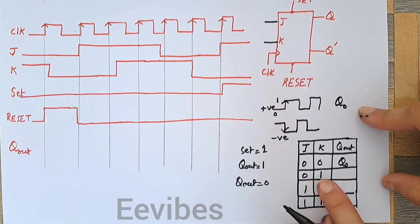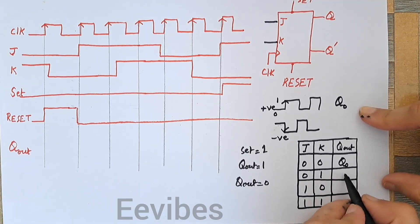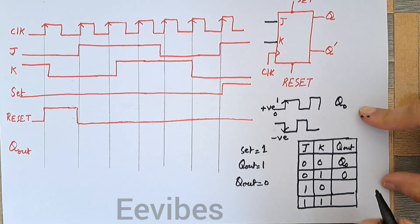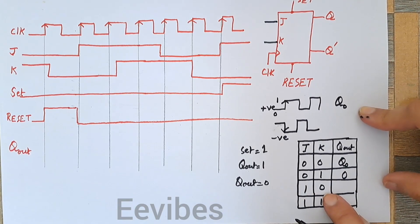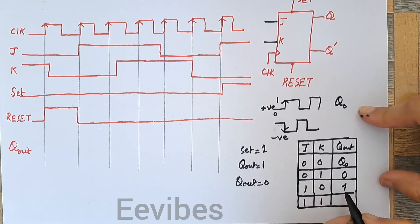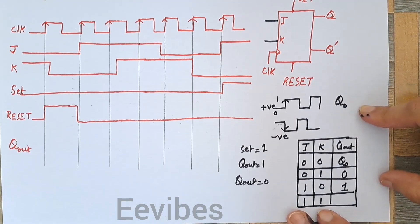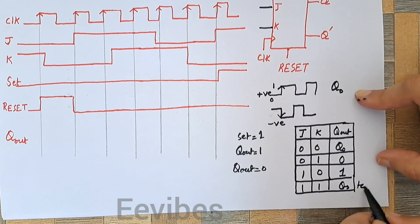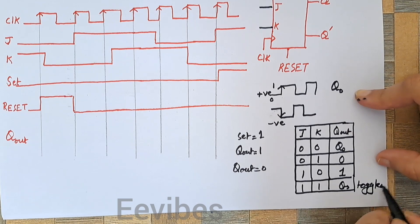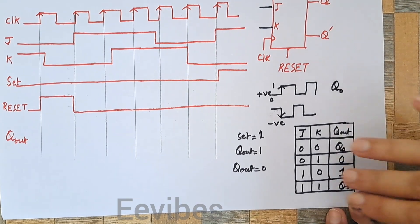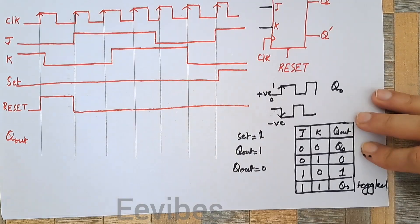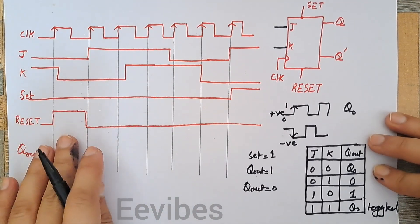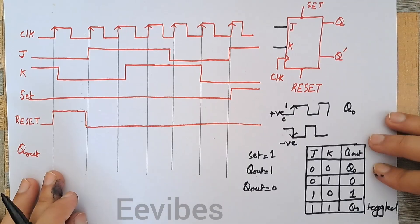When J goes to 0 and K becomes 1, the output becomes 0, so the flip-flop goes into the reset state. When J is equal to 1 and K is equal to 0, the output of the flip-flop is set. When both inputs are equal to 1, the flip-flop goes into the toggling state, meaning Q₀ will be toggled. Based on this and the value of the clock signal, we can determine the value of the output signals.